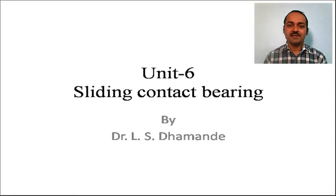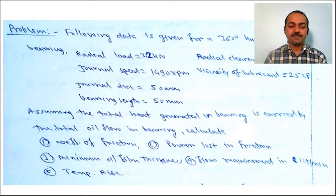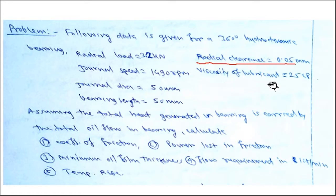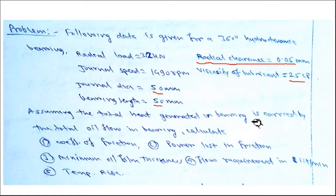Welcome to the third part of the sliding content bearing. We will now solve a few numericals on the design of sliding content bearings by the Raimondi and Boyd method. The first numerical gives the following data for a 360-degree hydrodynamic bearing: the radial load to be carried is 3.2 kN, journal speed is 1490 rpm, radial clearance is 0.05 mm, viscosity of the lubricant is 25 centi-poise, journal diameter is 50 mm, and bearing length is 50 mm — a square bearing.